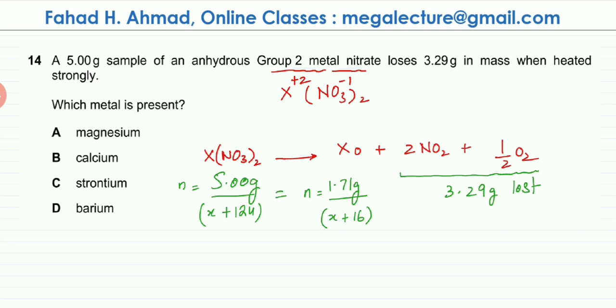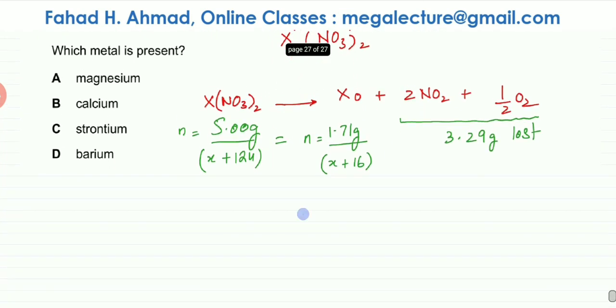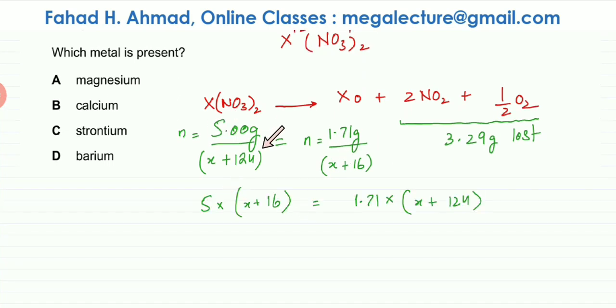And I'm going to try and solve this now. So rearranging: 5 multiplied by X plus 16 equals 1.71 multiplied by X plus 124, so that's the first thing I've done. Now I'm going to try and make X the subject of the equation.